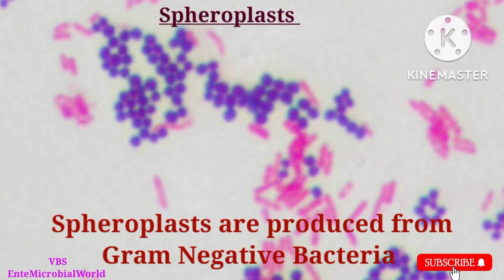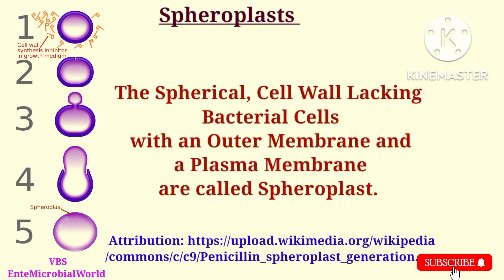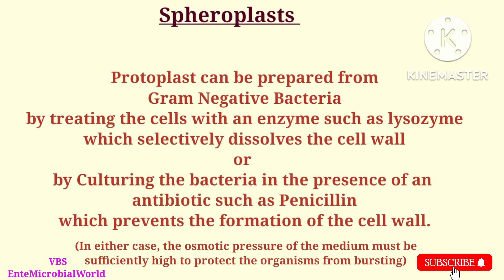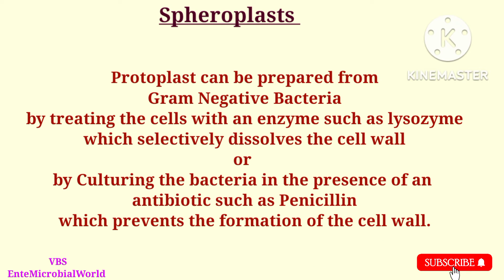Next we are going to see what are spiroplasts. Spiroplasts are produced from gram negative bacteria. Spherical, cell-wall-lacking bacterial cells with an outer membrane and a plasma membrane are called spiroplasts. Spiroplasts can be prepared from gram negative bacteria by treating the cells with an enzyme such as lysozyme, which selectively dissolves the cell wall.